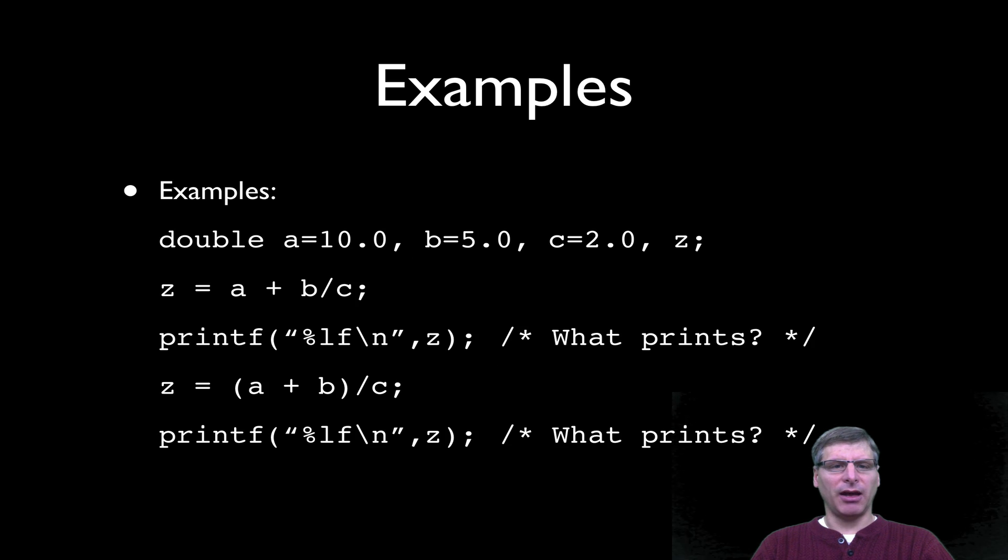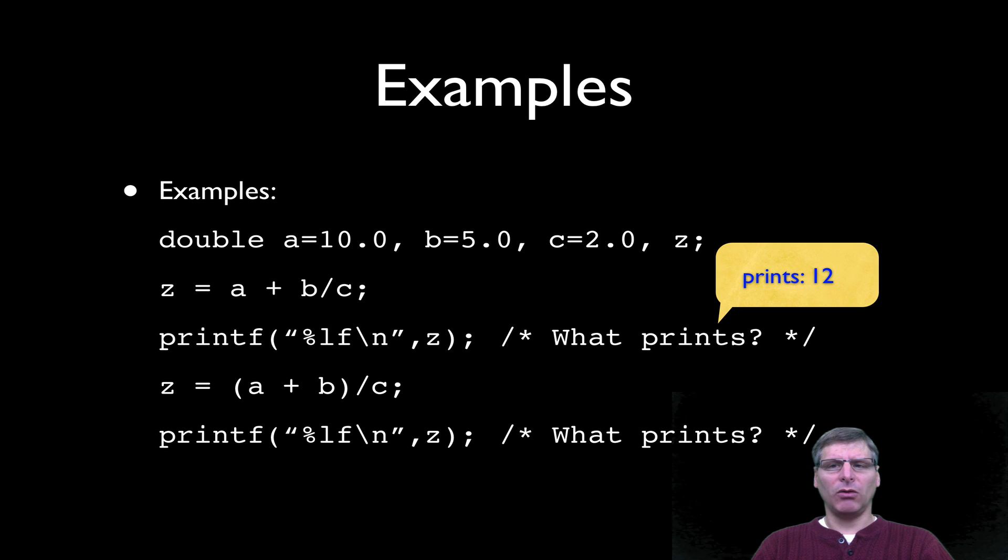Here's some examples that help us understand this notion of precedence. So I've got a double a equals 10.0, a variable b equal 5.0, a variable c equal 2.0, and then a variable z, which I've left undefined. So in this first expression, I have z equals a plus b divided by c. And so we know from the precedence orders that we just talked about, that that division has to happen first, and after that, the addition. So we're going to have 5.0 divided by 2, which yields a 2.5, which then gets added to 10, which gives us a 12.5. So the printf statement, which appears right under the expression, is actually going to print out 12.5.